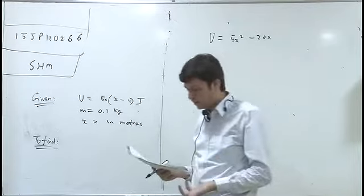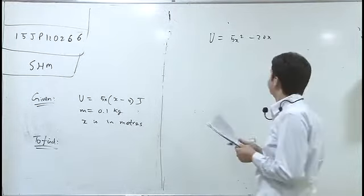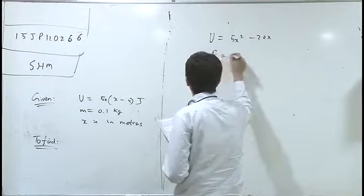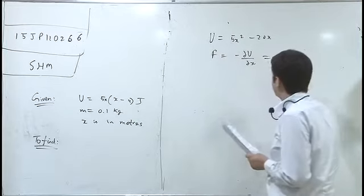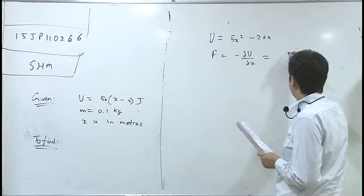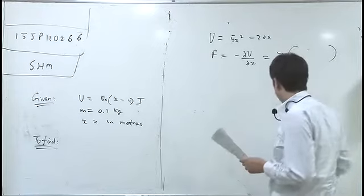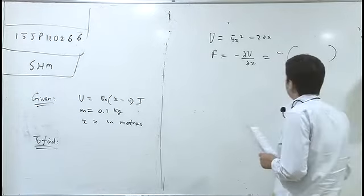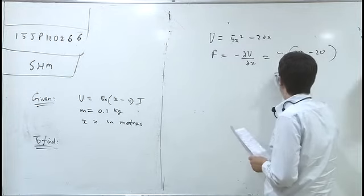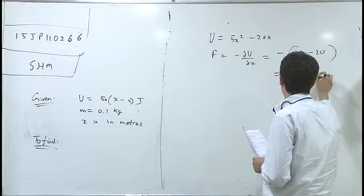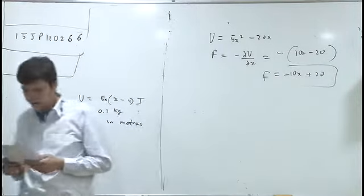If I have potential energy given, then I can find the force. It will look like F equals minus dU by dx. If you differentiate with minus, then it will come 10x minus 20, so F equals minus 10x plus 20.